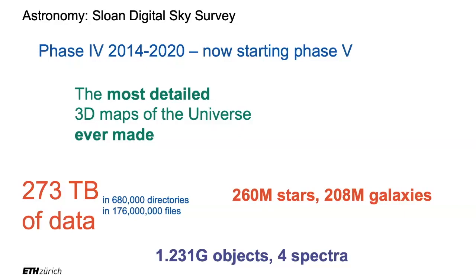And this is actually new: just last month, in August, Phase 5 released the first data sets. So there is already data available for Phase 5. I took a look at the website and it turns out they have a way to query the data. Guess with what language? SQL, exactly. And there is a sandbox where you can enter SQL queries and query the data.